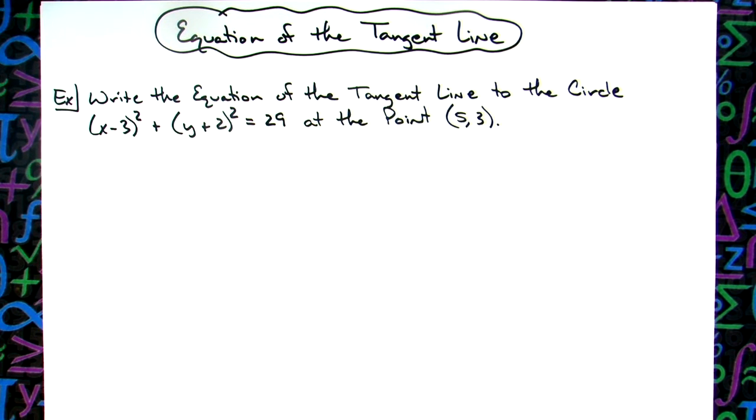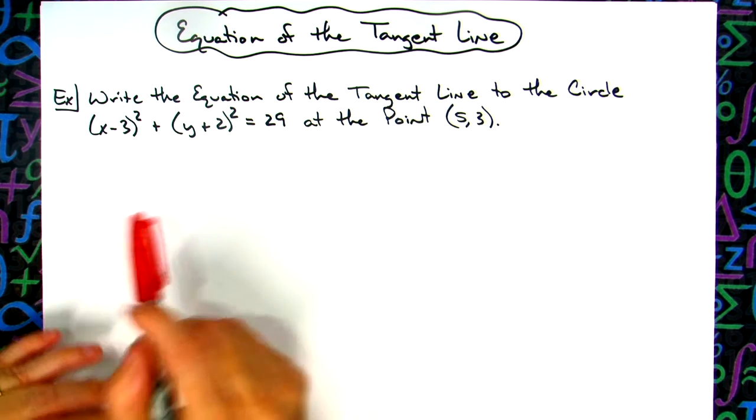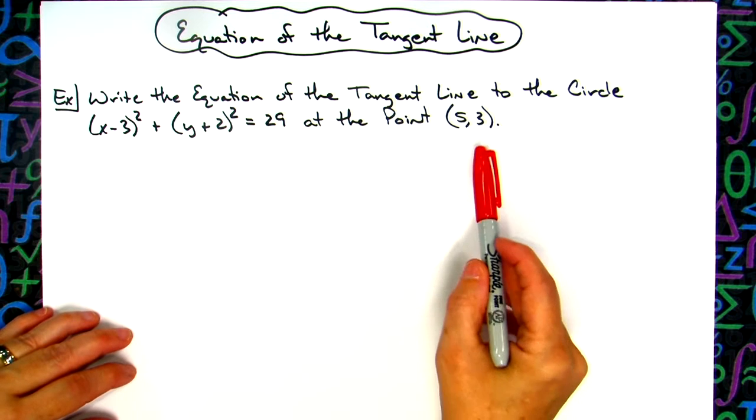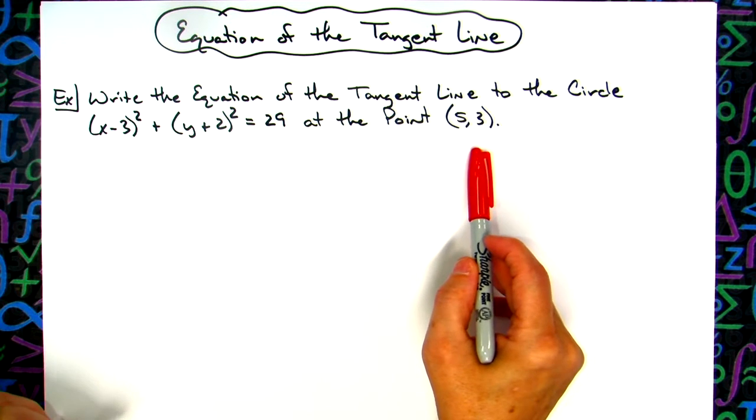All right, in this video we're going to be taking a look at how to go about writing the equation of a tangent line to a given circle at a given point, that point being on the circle.